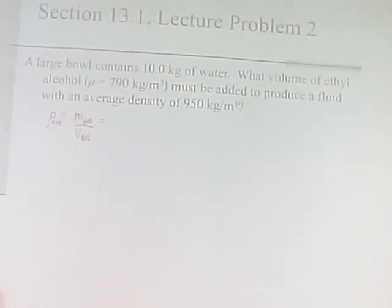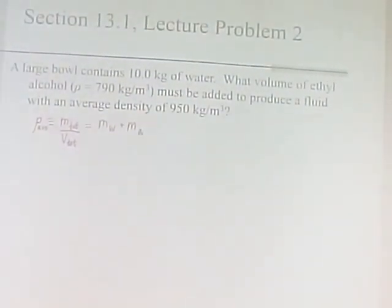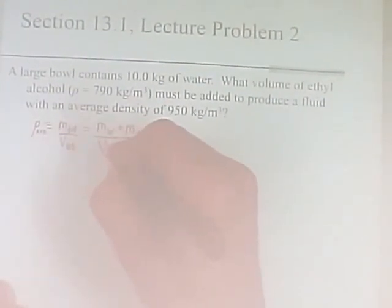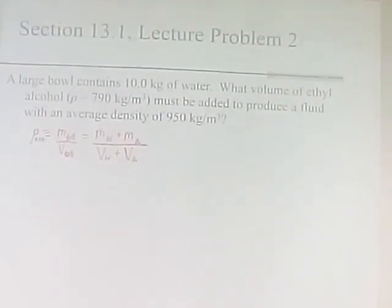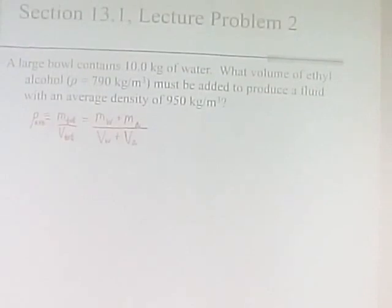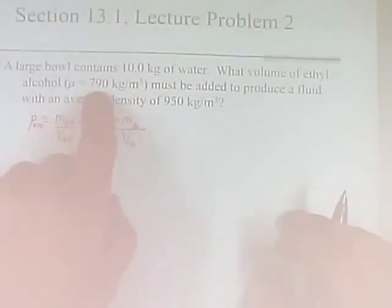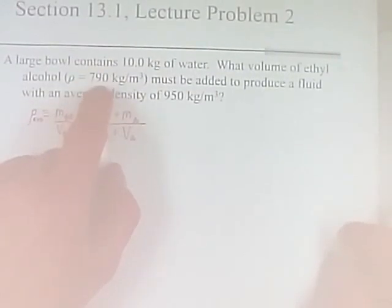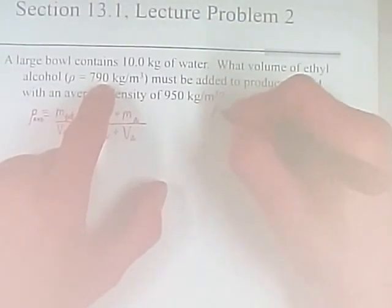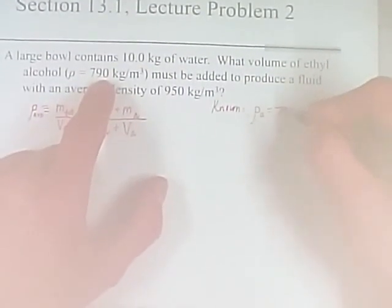We start with the formula for average density: it's the total mass of both fluids divided by the total volume of both fluids mixed together. The total mass is the mass of the water plus the mass of the alcohol, and the total volume is the volume of the water plus the volume of the alcohol. The density of the alcohol is 790 kilograms per cubic meter.